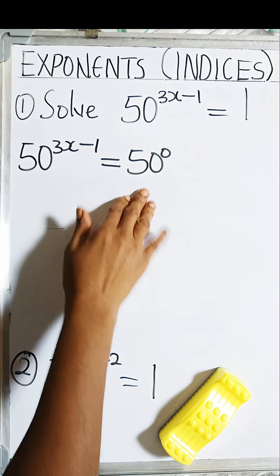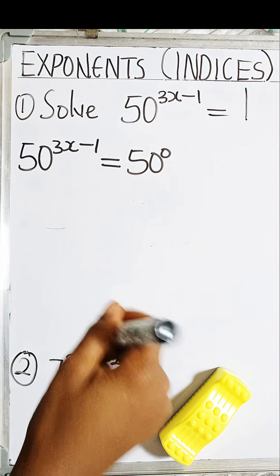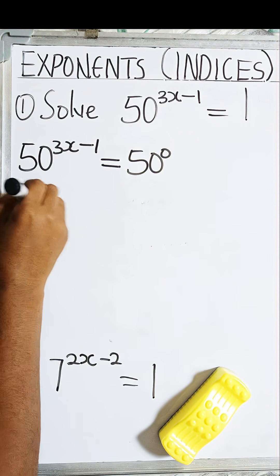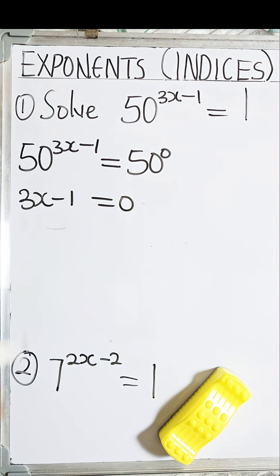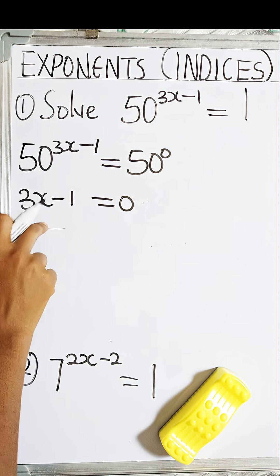Now because the bases are the same, we can equate the powers. So now I'm going to have 3x - 1 = 0. Now I have to find x.